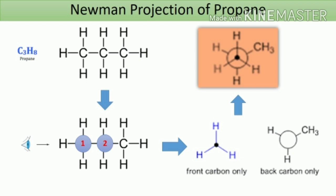Let us try to draw the Newman projection of propane, C3H8. Imagine you are looking at the molecule from the left. Carbon number 1 is the front carbon and carbon number 2 is the rear carbon. Three hydrogens are attached to the front carbon, so we show it as a dot with three lines. The rear carbon, carbon number 2, is bonded to two hydrogens and one methyl group, so we show it by a circle with three lines. The overall Newman projection of propane is shown by overlapping the two carbons.